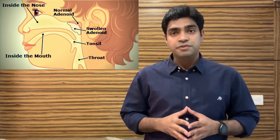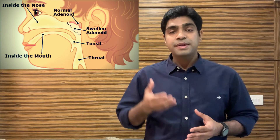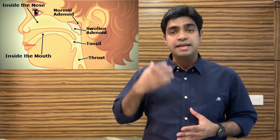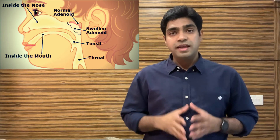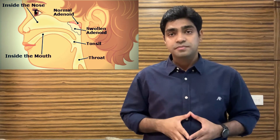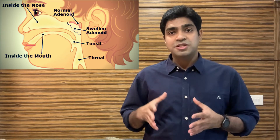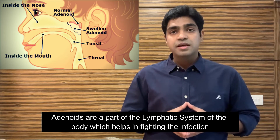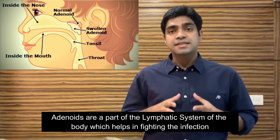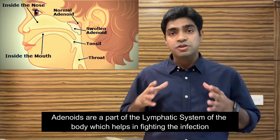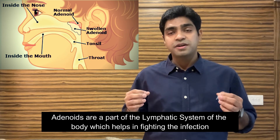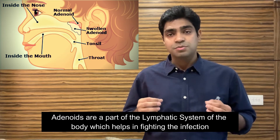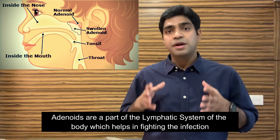What exactly are adenoids? Adenoids are a group of tissue, or patches of tissue, which are found behind the nasal cavity — behind the nose inside — and the upper part of the throat. In every individual, especially in children, these adenoid tissues are a part of the lymphatic system of the body, which fights against infection.